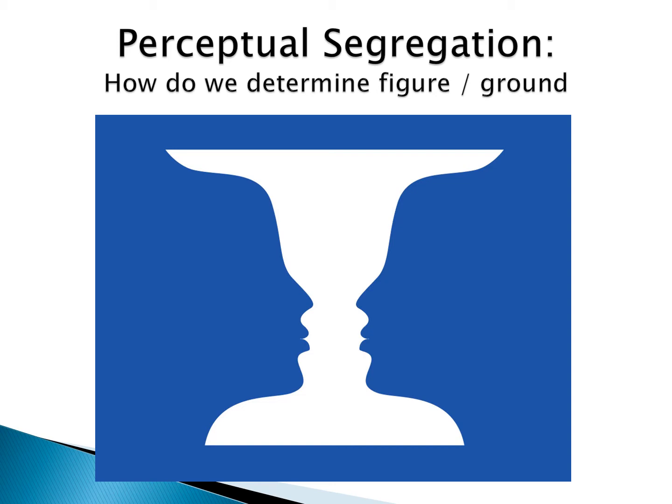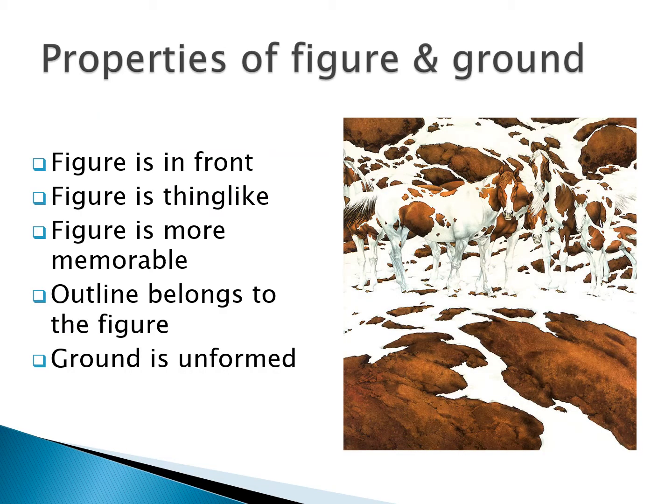So if I'm looking at the vase and that's popping out as the figure, it is the thing that is thing-like, and the background becomes just this kind of unformed background. The figure is in front, it is the thing that is thing-like, it's more memorable, and the outline belongs to the figure. The ground, the background, is unformed.